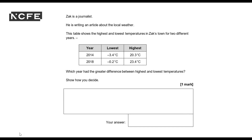One mark is available — it's quite straightforward. I'm still going to highlight the key information. The answer wants to be a year that had the greater difference, so I want to look at the difference between these numbers. Simply writing one of the years is not going to give me the mark; I do need to show how I decide.